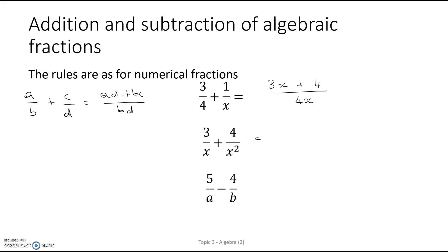This one, bd is x cubed. So we've got 3x squared plus 4x. Now this time we do have a common factor that we can cancel out. We can cancel out the x's and we're left with 3x plus 4 over x squared.